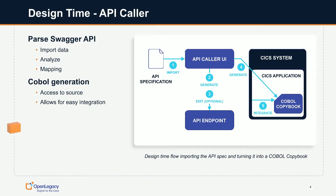Mainframe developers care about COBOL. They've written in COBOL, they work in it, they want mainframe assets. So we generate mainframe assets — copybooks and actual COBOL code — that the mainframe developer can then incorporate into their applications. There is some integration work to do to make it all work in your application, but that's what mainframe developers are very used to doing. The integration specialist does the work of importing the specification, generating the endpoint and the COBOL code, and then the mainframe developer uses and integrates that code.